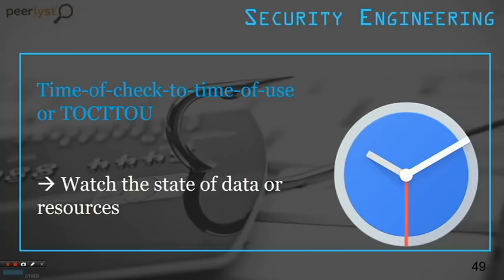TOCTTOU (Time of Check to Time of Use) relates to checking the state of data or a resource. It is a bug caused by a change in a system between the checking of the condition and the use of the result. An example is a race condition, where the output depends on the sequence or timing of uncontrollable events.